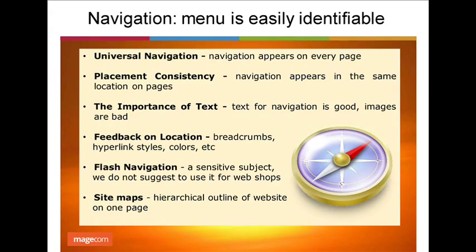The main navigation should be easily identifiable. Make your main navigation easy to access, read, and use. Factors involved in creating successful navigation menus include: universal navigation that appears on every page, placement consistency so navigation appears in the same location on every page, using text for navigation (images are bad), feedback on location with breadcrumbs, hyperlink styles and colors, and site maps. The best place for primary navigation menus is the top or left panel. To minimize navigational confusion, keep your navigation in the same location on every page of your website.